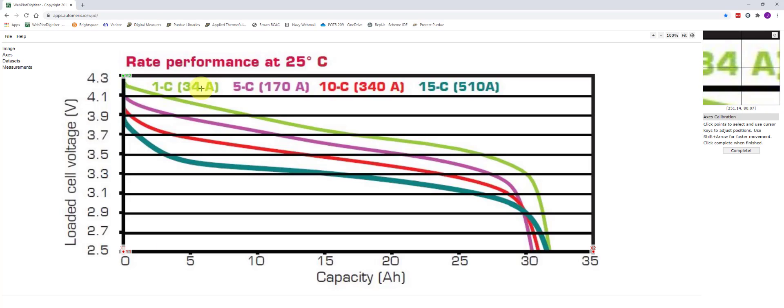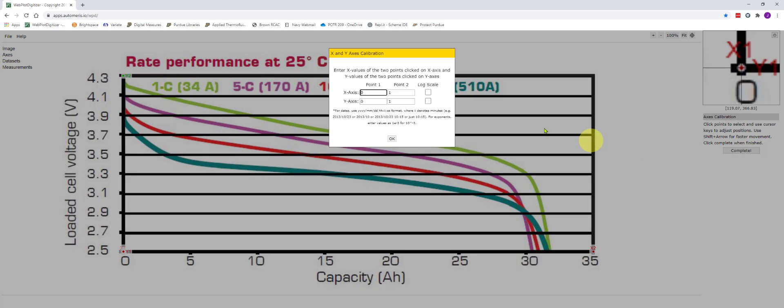When I'm happy with where my x1, x2, y1 and y2 points are I click on complete. And now we enter the values for those points: 0 to 35 on the x-axis and 2.5 to 4.3 on the y-axis.